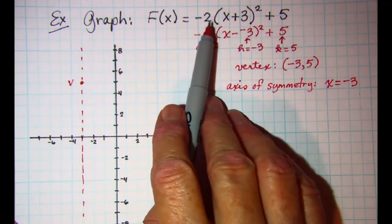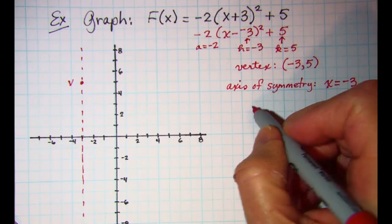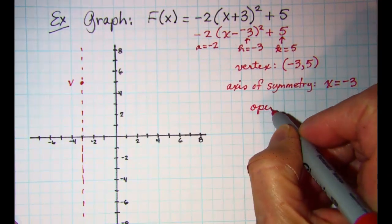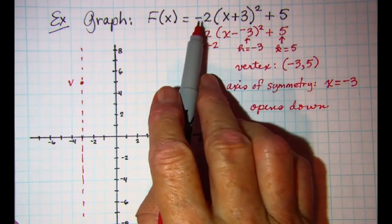We also know that the parabola will open down, since a is negative.